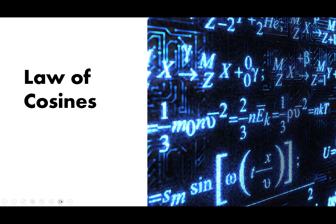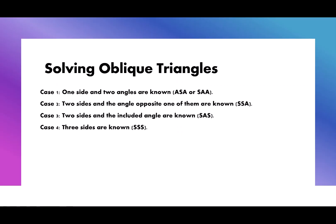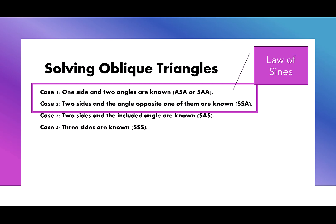Hi everybody, today we're going to talk about the law of cosines. We use the law of cosines when we are solving oblique triangles, which means we have an acute triangle or an obtuse triangle. We've already used the law of sines to solve angle-side-angle, side-angle-angle, and sides and angle triangles.